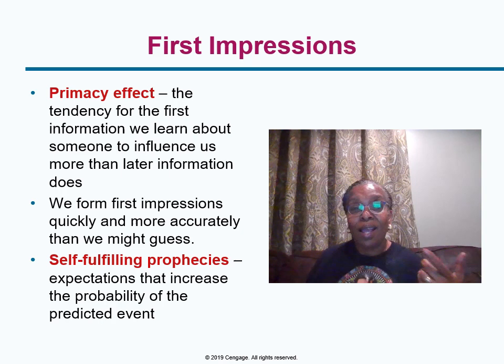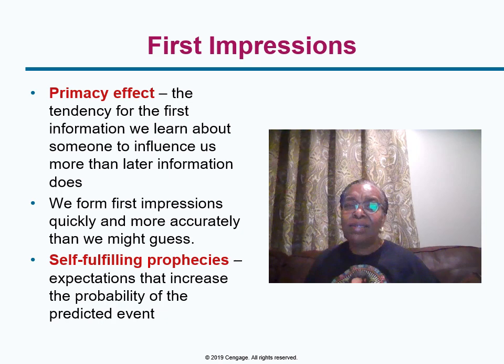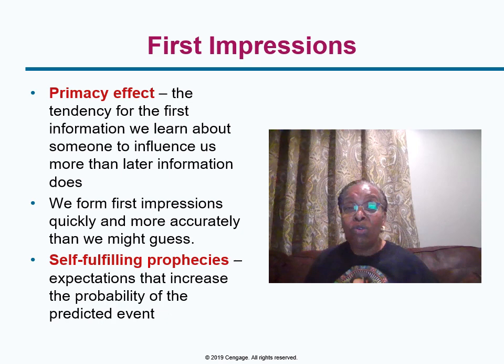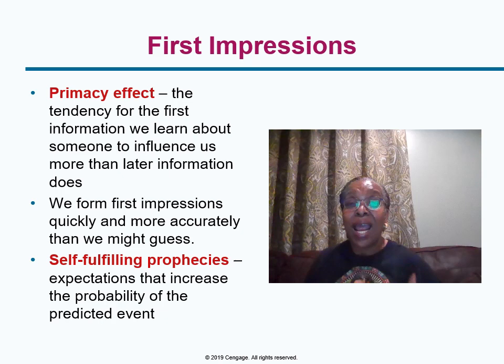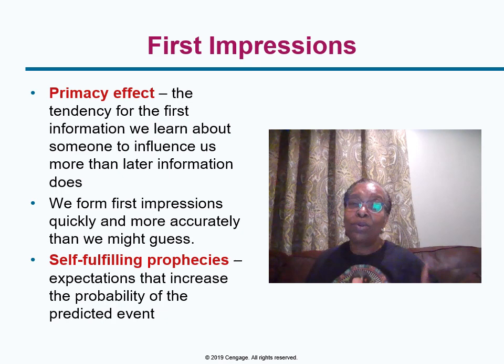Suppose a psychologist hands you a cell phone and asks you to talk with someone, while showing you a photo supposedly of that person. Unknown to the person you're speaking to, the psychologist might hand you a photo of a very attractive or a less attractive person. You may act friendlier toward the person you regard as attractive, and that person reacts by becoming more cheerful and talkative. Basically, your first impression changes how you act and influences the other person — or they might act cold based on your expectations.